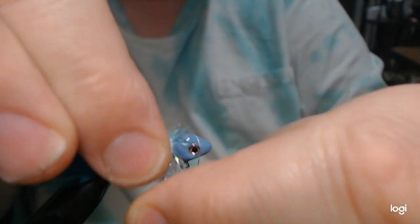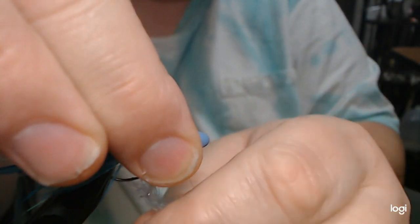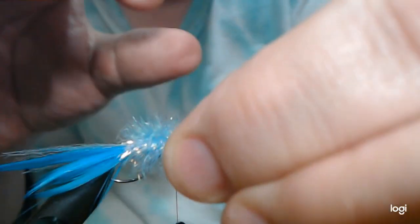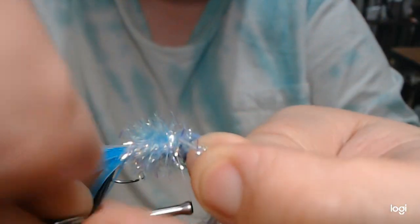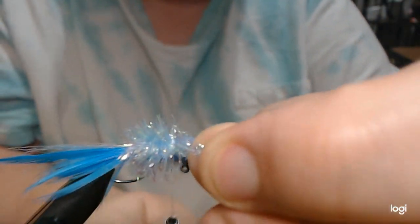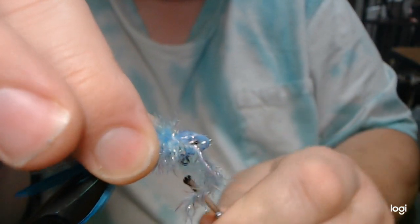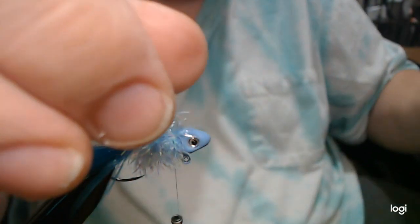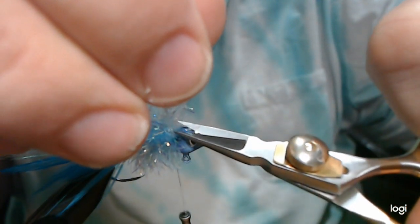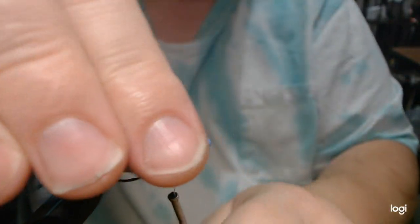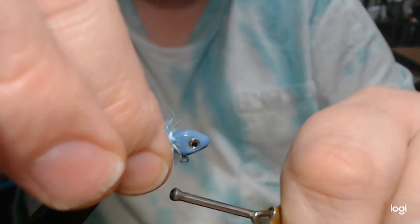I'm just making a couple extra wraps here at the head just to get a little bit of a taper. We'll trim it, get as close as we can without cutting the thread. With the way things were going there for a little bit, I thought I just very well might cut the thread.